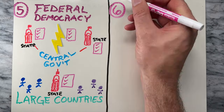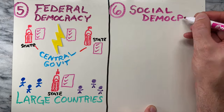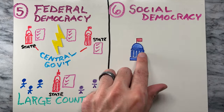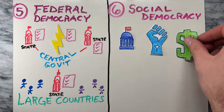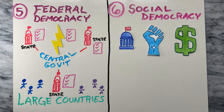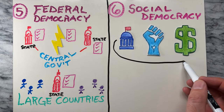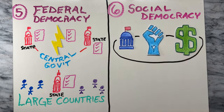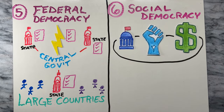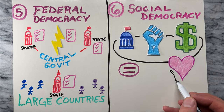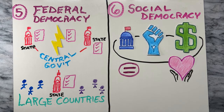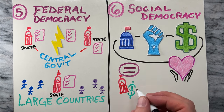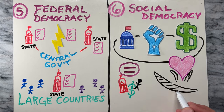And after that is social democracy. Social democracy combines democratic governance with a commitment to social and economic policies that promote equality and social welfare. It typically involves a mixed market economy with strong social safety nets.